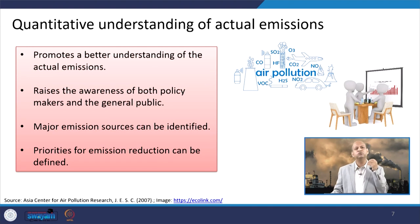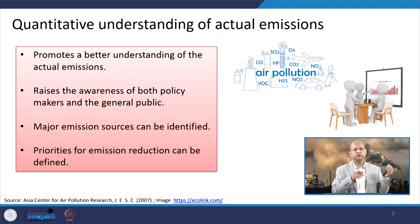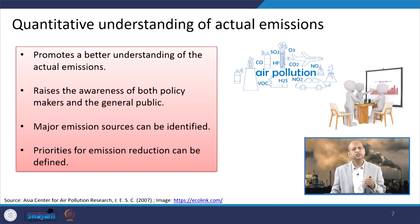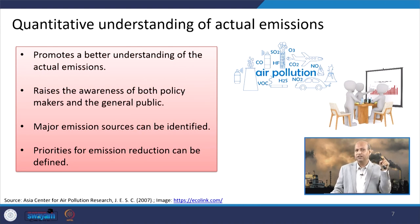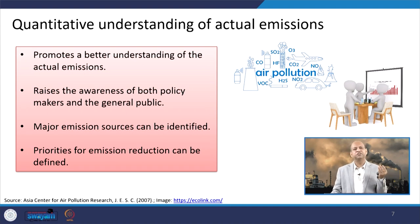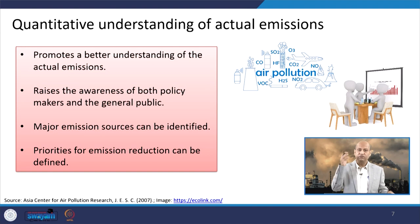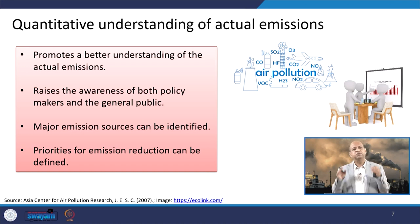Emission inventory development is an estimation — you can never reach the absolute value, just an estimation based on certain data. It also raises awareness of both policy makers and general public. For a particular city, with the emission inventory for different sectors, you can judge which sector is responsible for a particular pollutant's increase or decrease. If PM10 is coming predominantly from activity A compared to activity B, better to target A to reduce PM10. This also helps identify precursors that result in secondary aerosols.